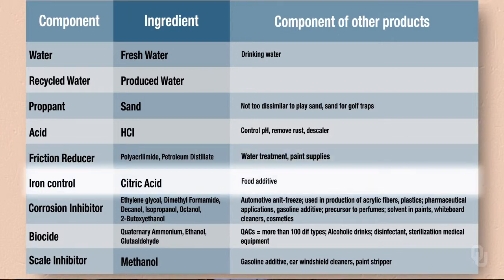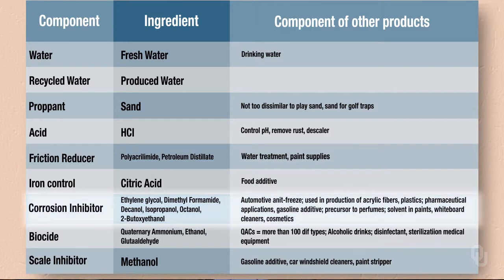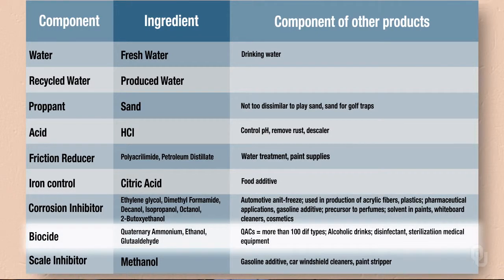Iron control — citric acid is commonly used as a food additive. Corrosion inhibitors, things like ethylene glycol, dimethyl formamide, and isopropanol, are used in a variety of products including automotive antifreeze, production of acrylic fibers and plastics, pharmaceutical applications, gasoline additives, precursors to perfume, solvents and paints, whiteboard cleaners, and cosmetics. Biocides are commonly used in alcoholic drinks and disinfectants and in sterilization for medical equipment.